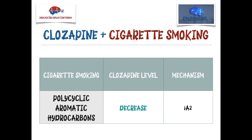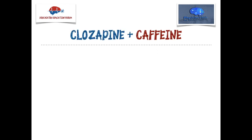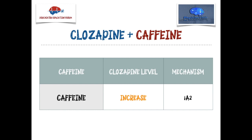The last interaction is caffeine. Caffeine is a 1A2 inhibitor, so it will increase the level of clozapine in your patient. Always monitor for coffee, cola, or other caffeinated beverage intake in patients on clozapine. The same rule applies in reverse — if somebody stops caffeine intake, it can cause a decrease in clozapine level. So caffeine and cigarettes both act on 1A2 but in opposite directions.